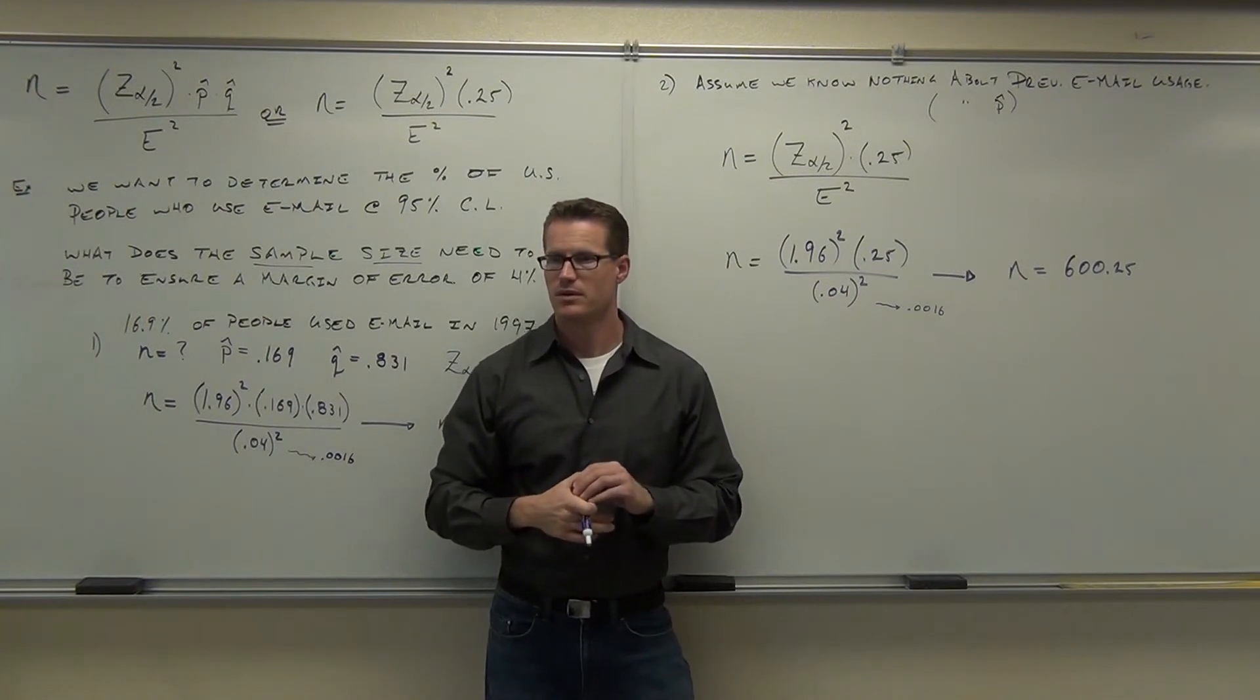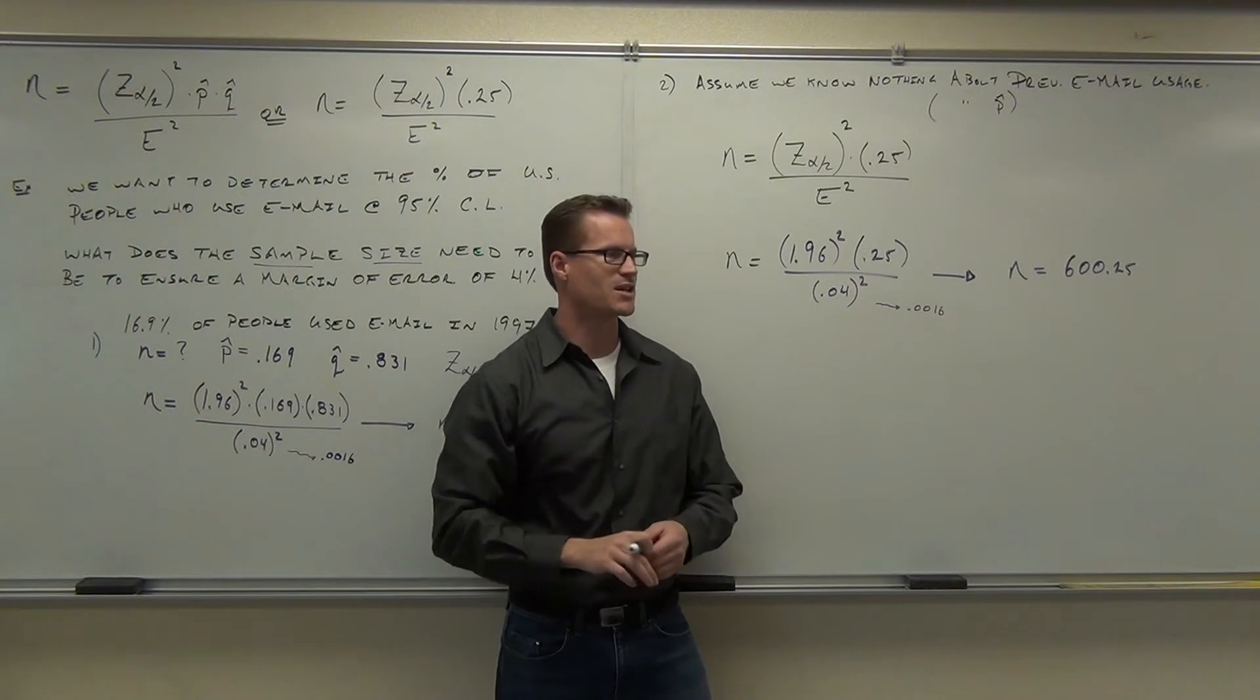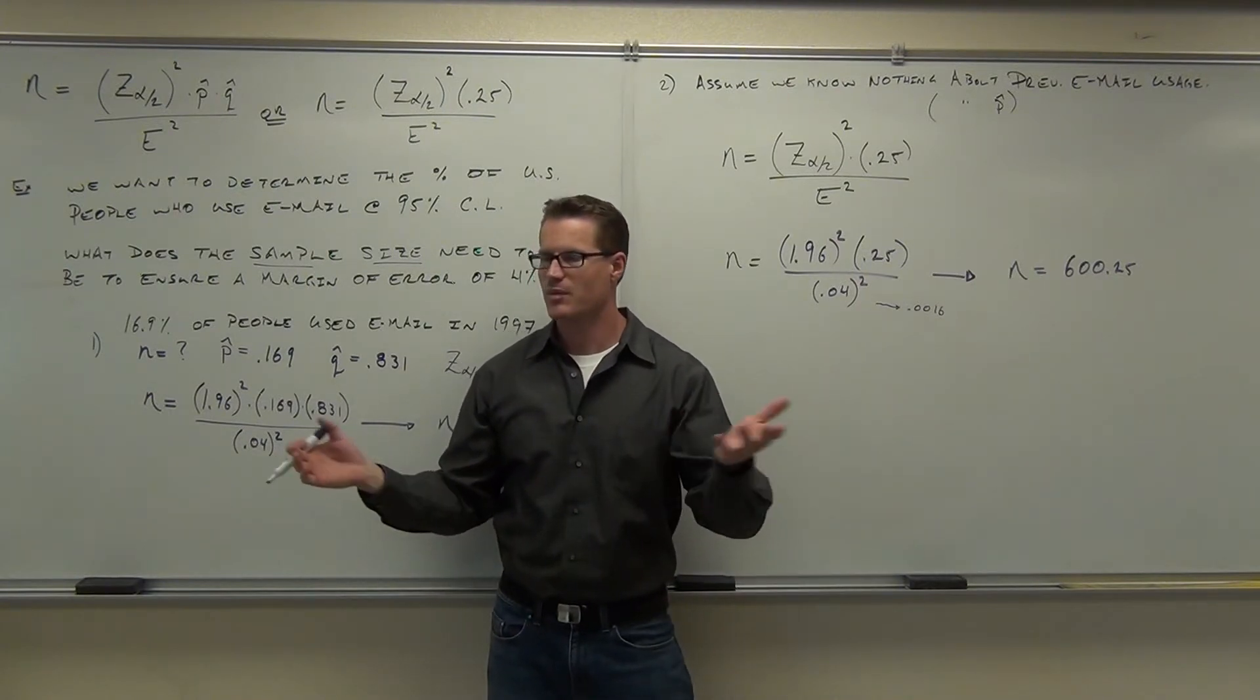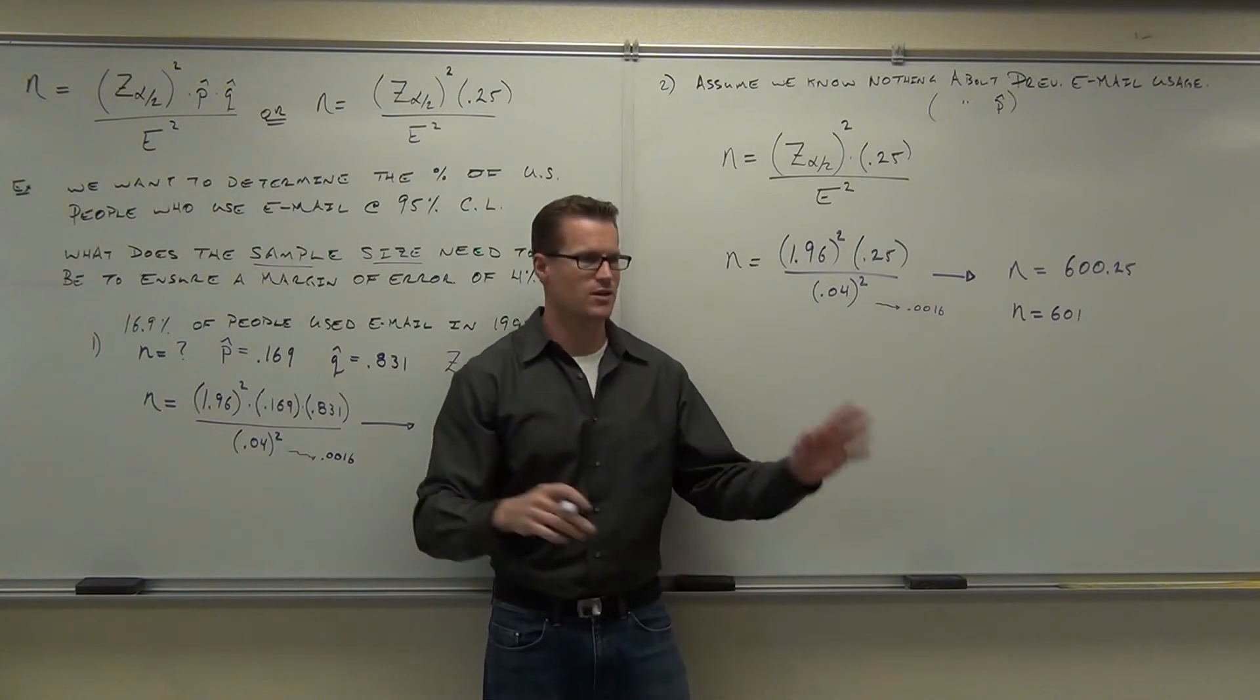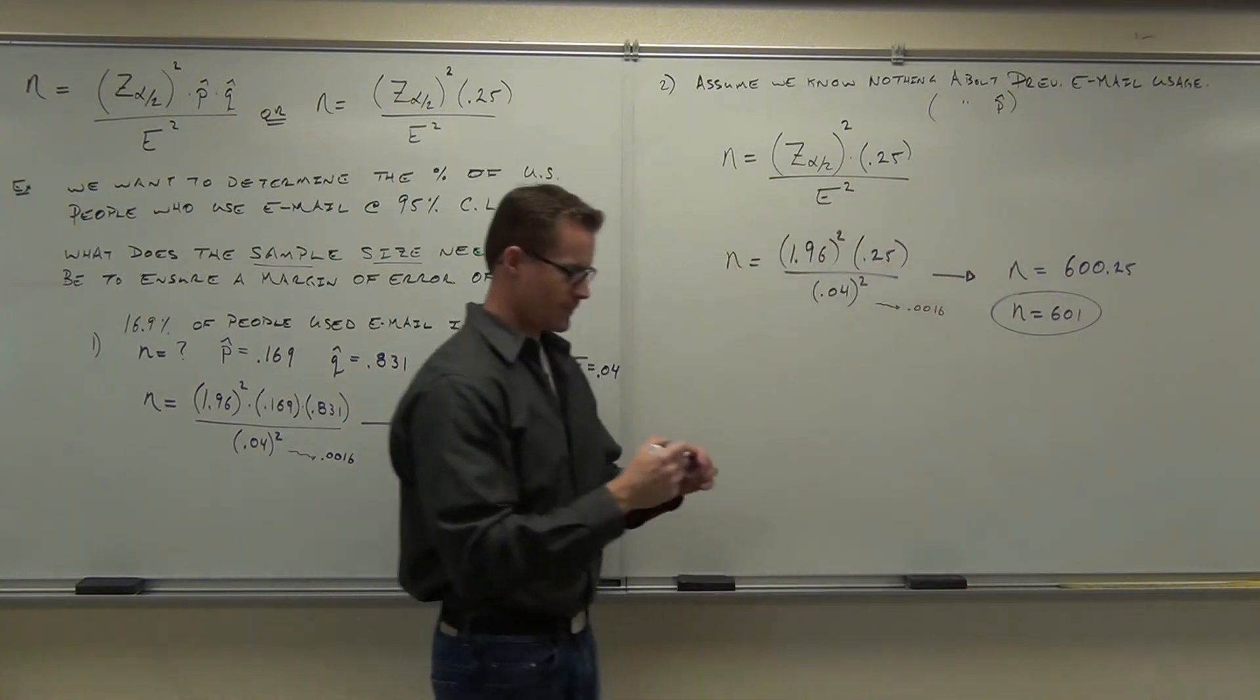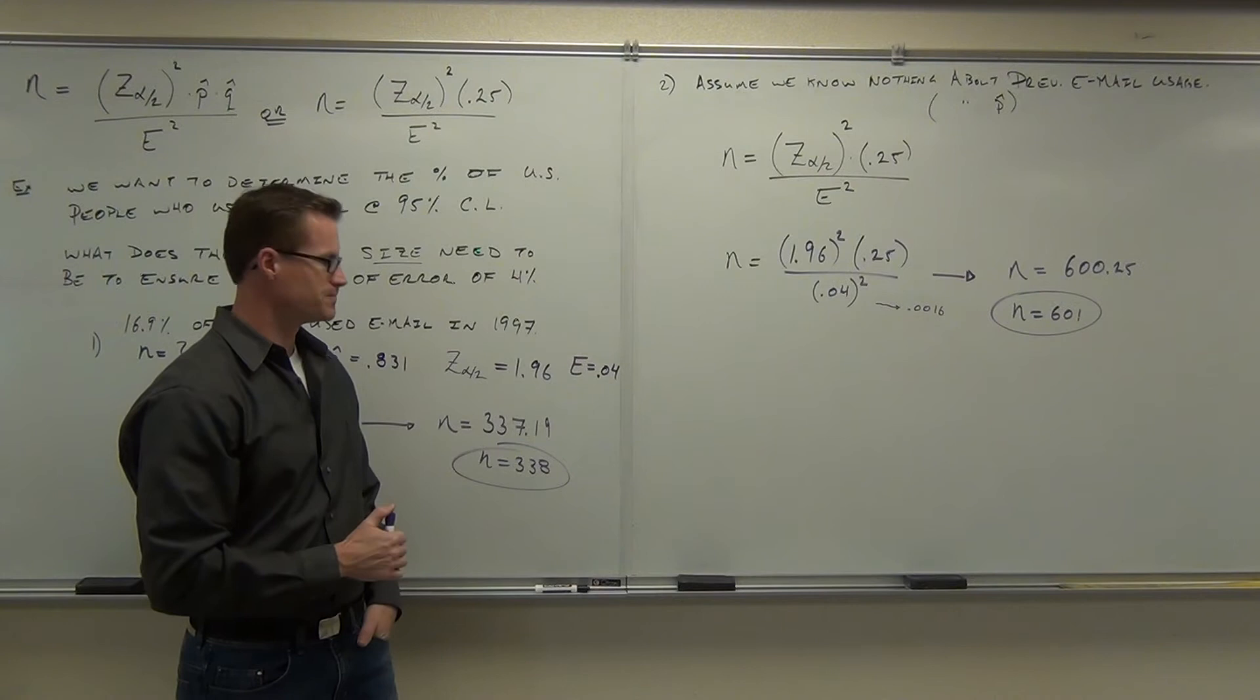600.25. You're going to find 600 and a quarter people. That's discriminatory. Midgets are real people, they count. No, I'm just kidding. You're going to take 600 and how many? One. That's going to be good enough.